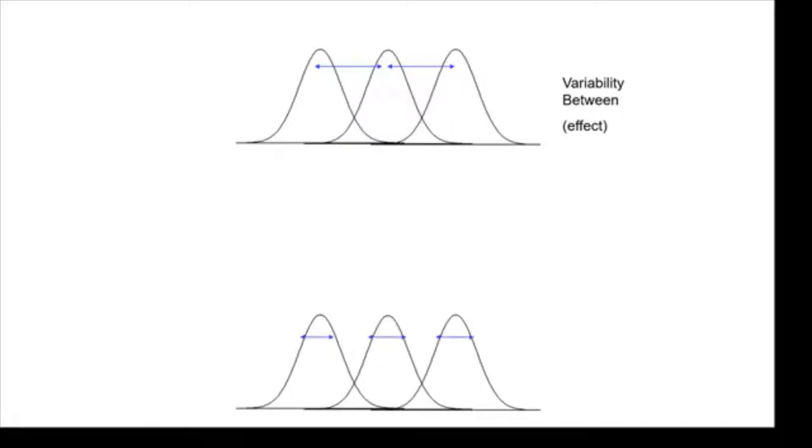Then down here, we have the variability that's just due to random chance. This is just people being different and that's the variability within, and sometimes we just call it error because it's just random error. It's not due to anything systematic. It's just the random variability between people.